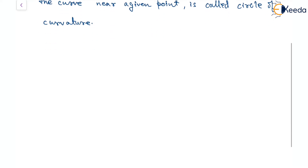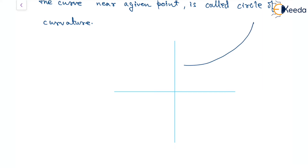Let's try to understand this basically. Let's say we have a curve and a point P at coordinates x, y. At this particular point, or very near places on the curve, if we can approximate a circle that fits best at this point, then of course there should be a center to the circle and a certain radius. This is all about our topic: center and circle of curvature.